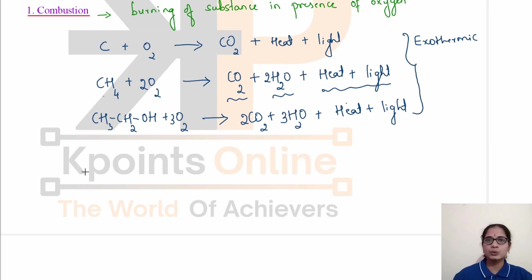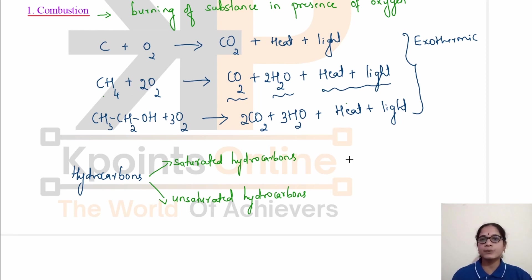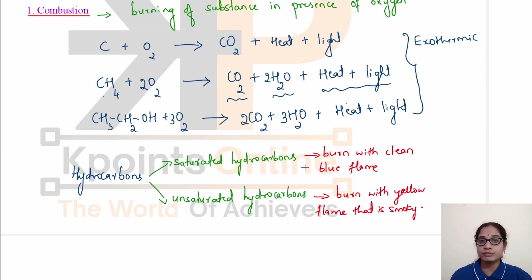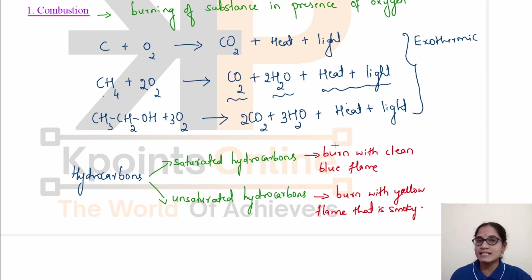There are two types of hydrocarbons: saturated and unsaturated. Saturated hydrocarbons give a clean blue flame due to complete combustion. Unsaturated compounds burn with a yellow smoky flame. When there is incomplete combustion, it results in the formation of soot — a black-colored substance. For example, when naphthalene balls are burned, you can clearly see soot being produced due to incomplete combustion.